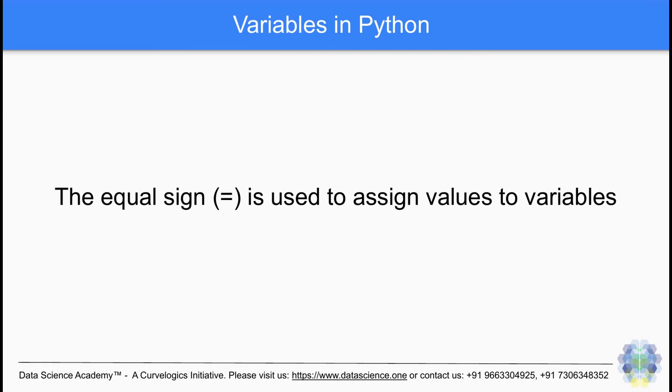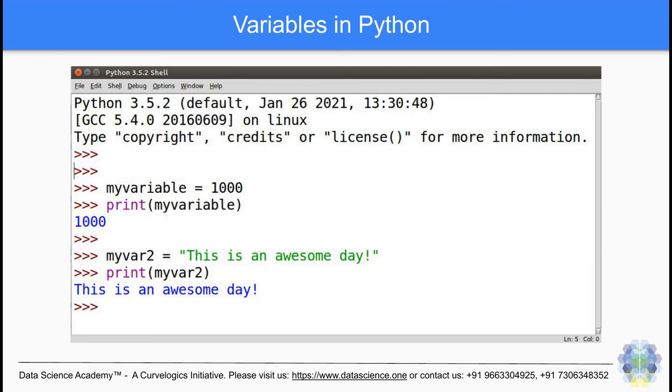The equal sign is used to assign a value to a variable. For example, we have assigned a value of 1000 to the variable called myVariable.